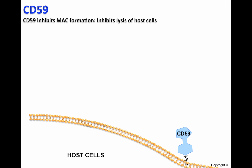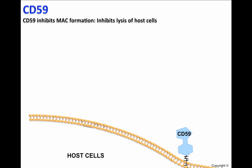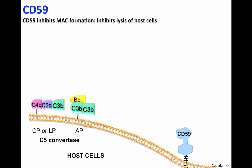In certain circumstances, the complement system can activate on the cell surface of host cells. If that is the case, it is possible that the C5 convertases of the classical pathway and lectin pathway — C4b, C2b, C3b — or the alternative pathway — C3b, Bb, C3b — are formed on the host cell surfaces.